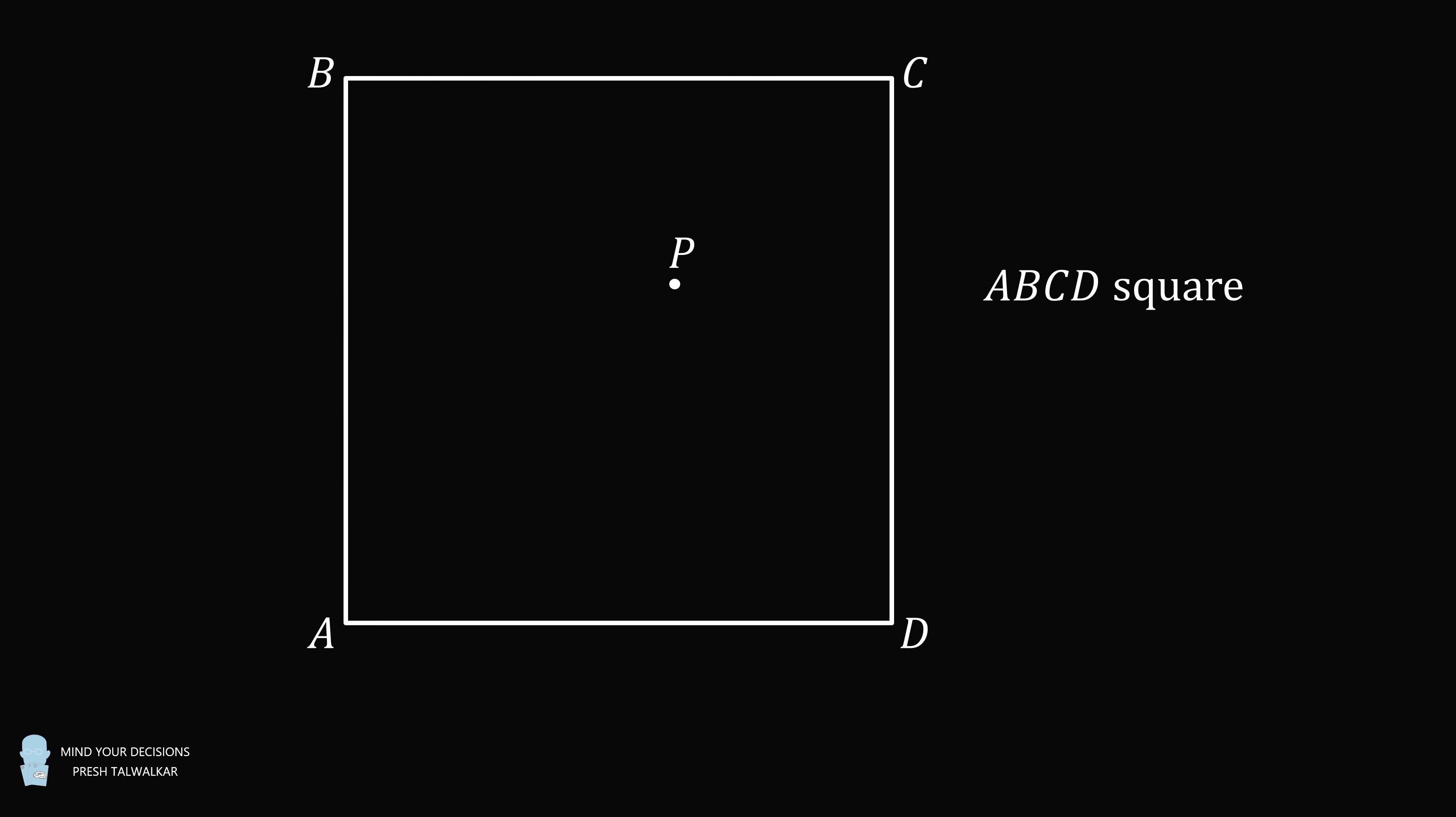A point P is chosen uniformly at random in the interior of the square. Construct the angle APD.